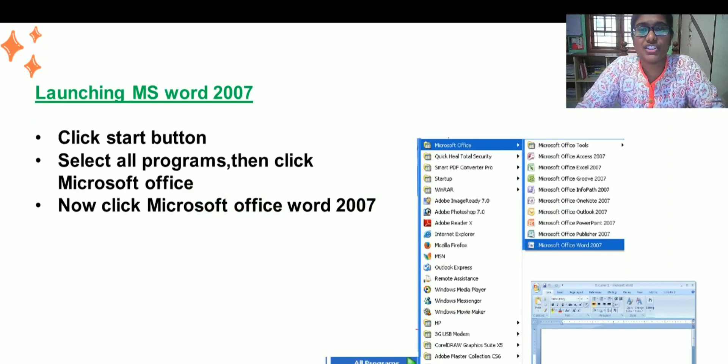What are the steps to launch this application? Let's study one by one. Firstly, click on the start button. Then select all programs. Then go to Microsoft Office option. There you will find a set of Microsoft applications. In that, click on Microsoft Office Word 2007.